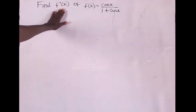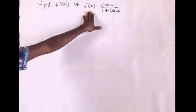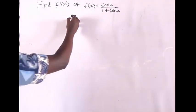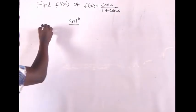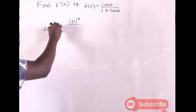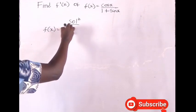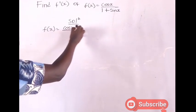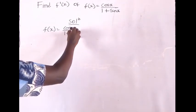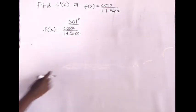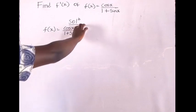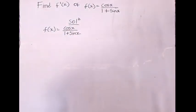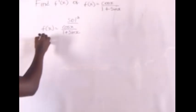Find the derivative of f(x) = cos x / (1 + sin x). The function given to us is f(x) = cos x over 1 + sin x. From here you can see that 1 + sin x is dividing cos x, so we use the quotient rule.